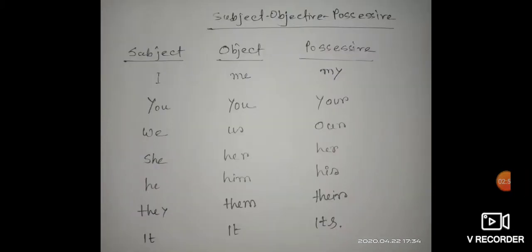Now I am telling the changes. Subject, object, possessive: I / me / my; you / you / your; we / us / our; she / her / her; he / him / his; they / them / their; it / it / its. It will be more clear to all of you whenever you practice. Practice makes you more perfect for this.